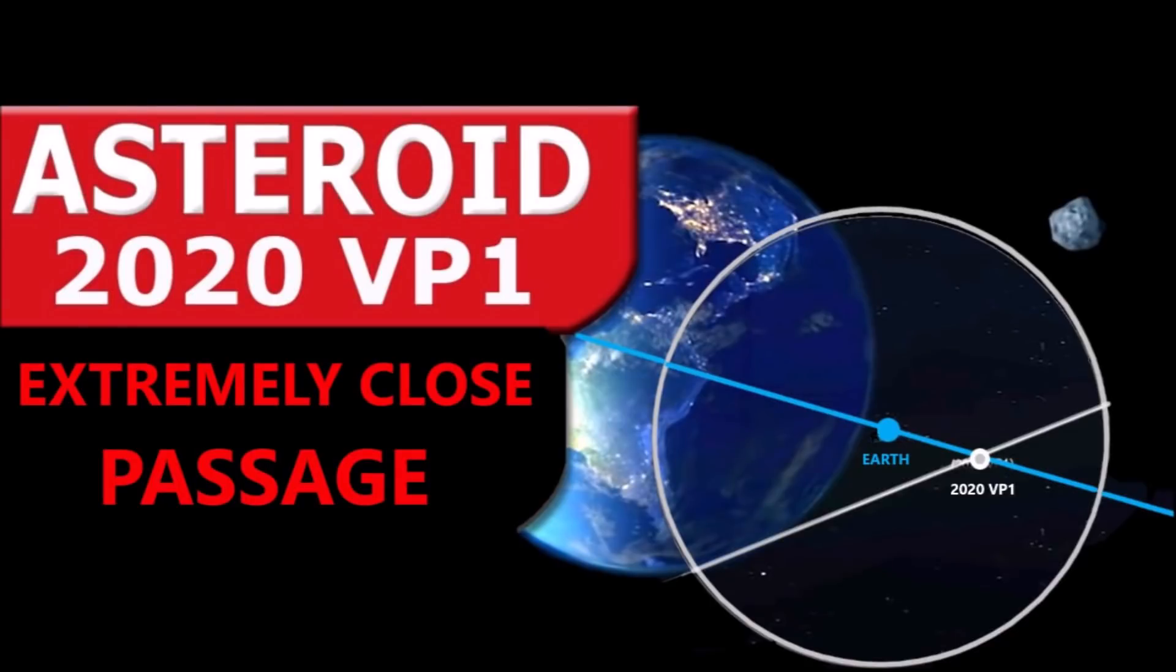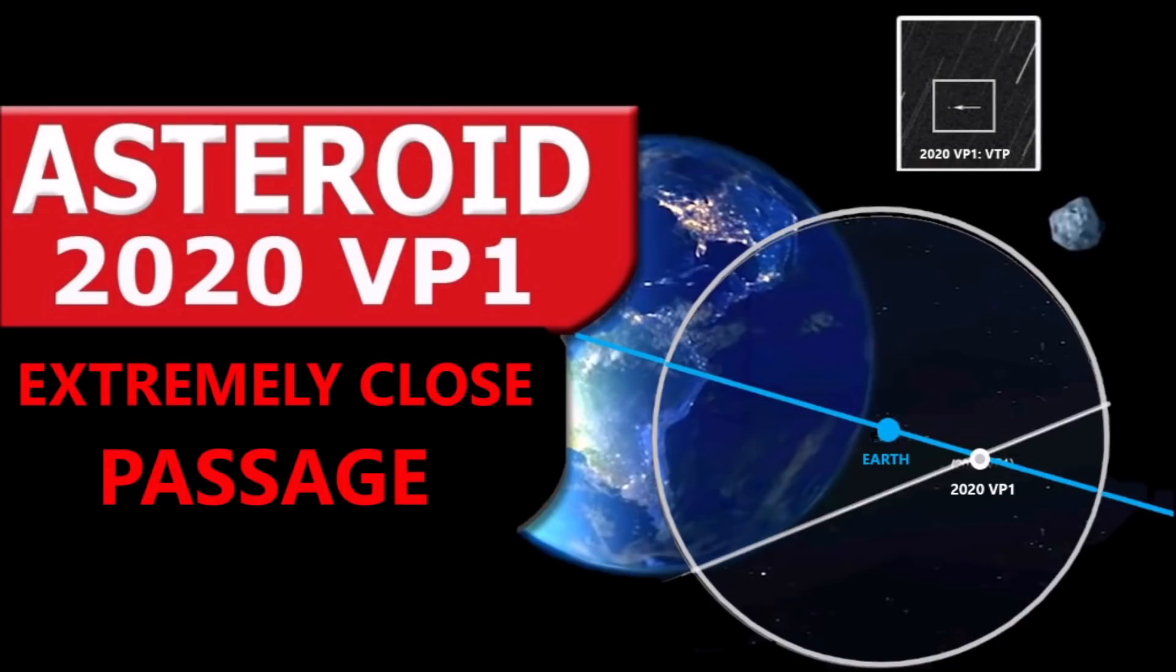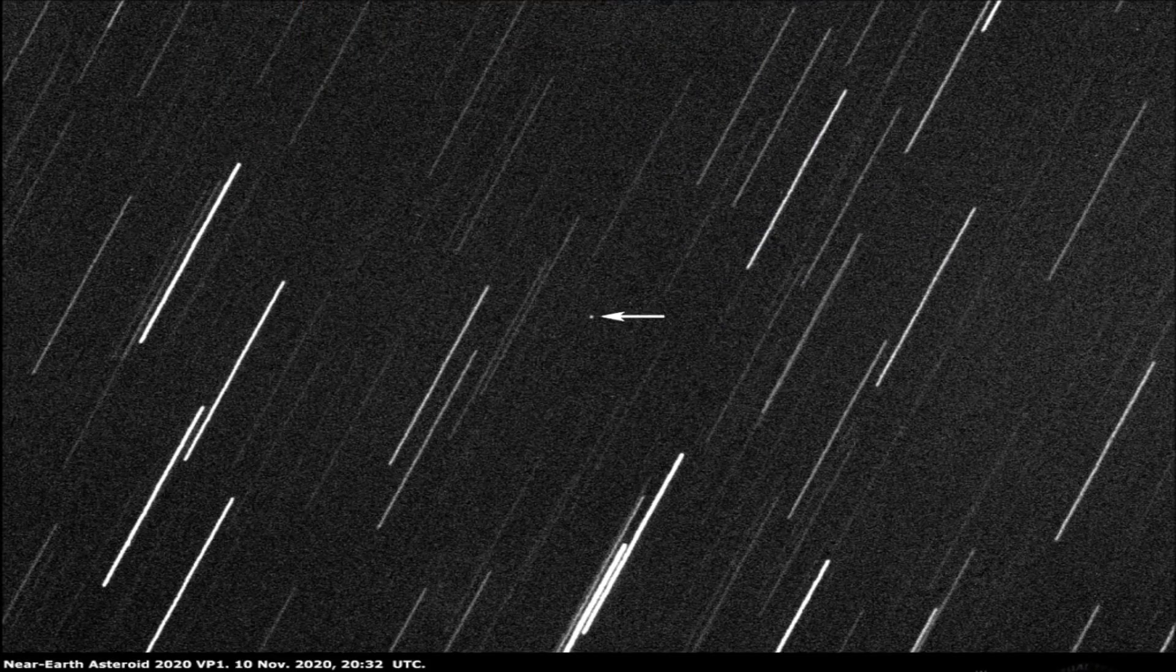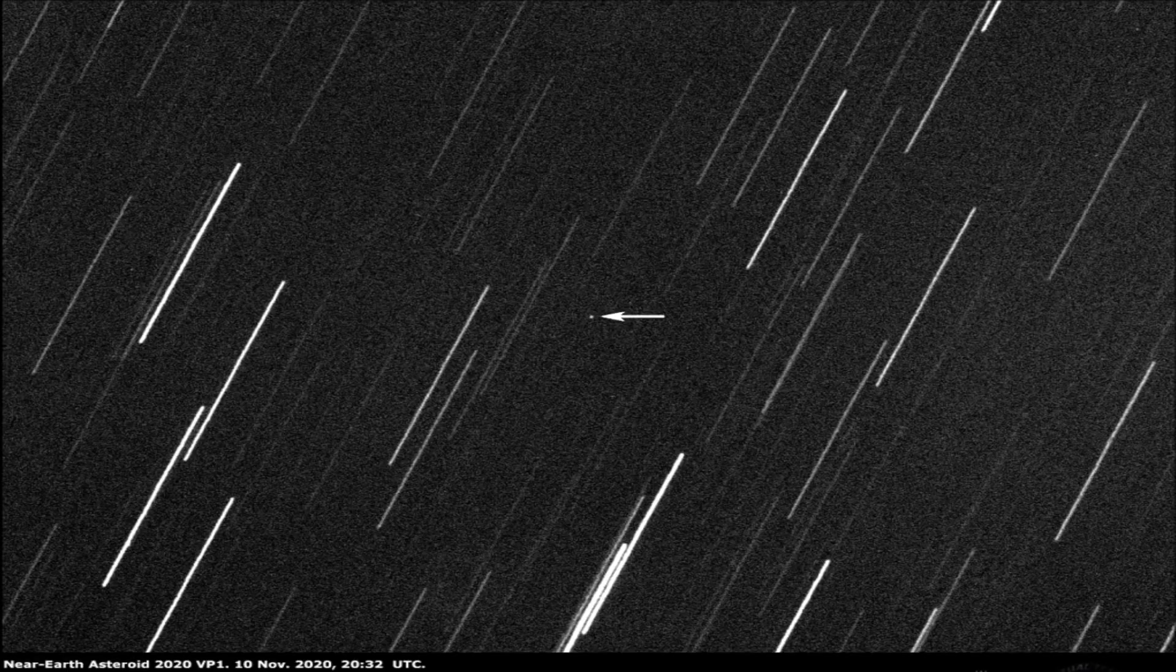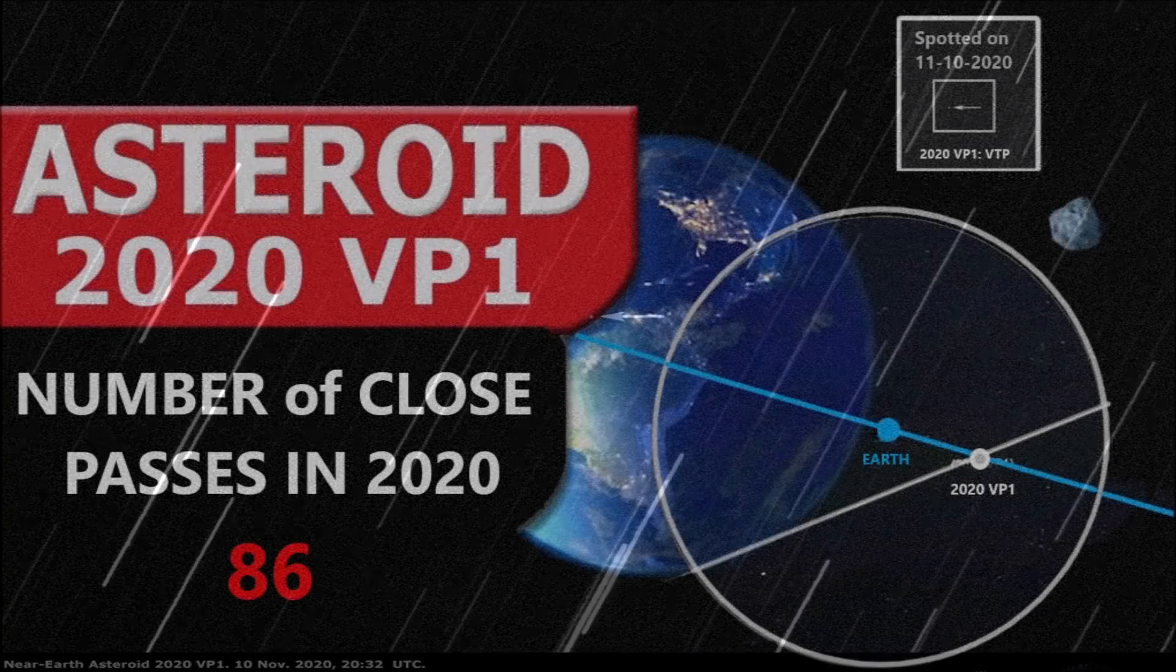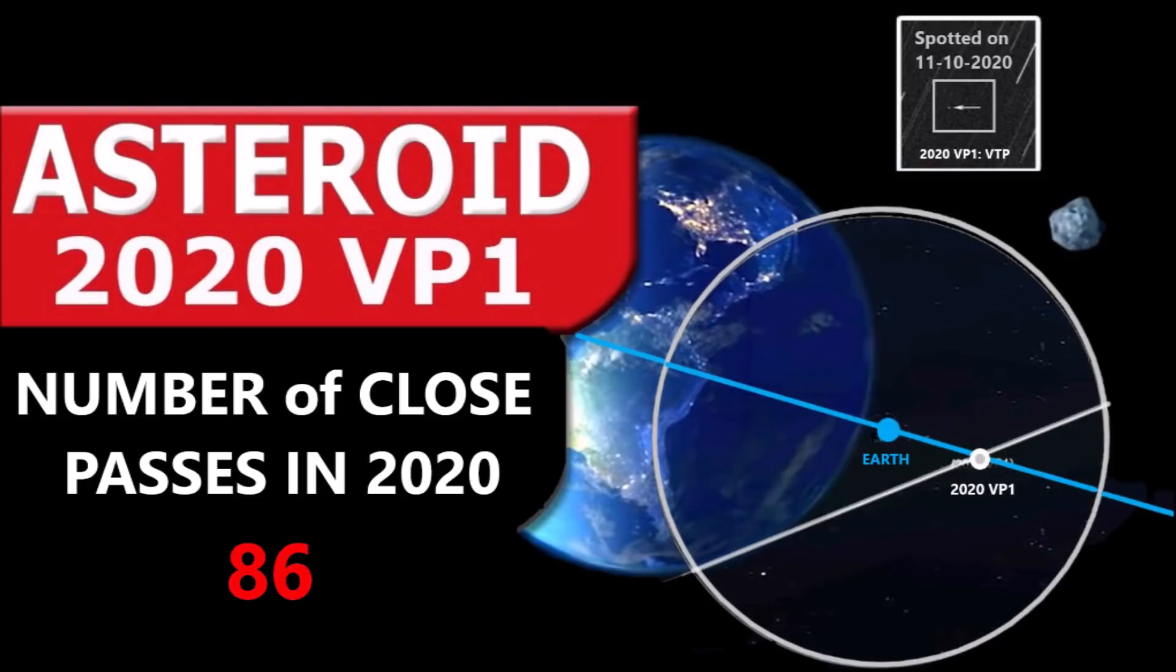An asteroid known as 2020 VP1 passed extremely close to the Earth, close enough to where it was photographed by astronomers as it passed by our planet. The asteroid, which is 59 feet wide, passed at a distance of nearly 112,000 miles, roughly half the distance between the Earth and the Moon. The asteroid was discovered by NASA satellites on November the 10th, just one day prior to its passage, traveling at a speed of 48,466 miles per hour. The image of the asteroid was picked up by the Virtual Telescope Project on November the 10th, when it was still approaching the Earth from a distance of 515,000 miles. Asteroid 2020 VP1 becomes the 86th known asteroid to pass within one lunar distance of the Earth in the year 2020.